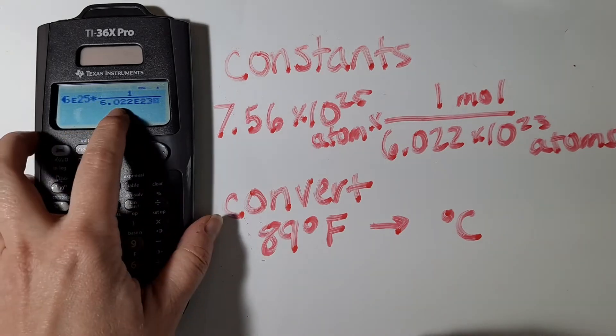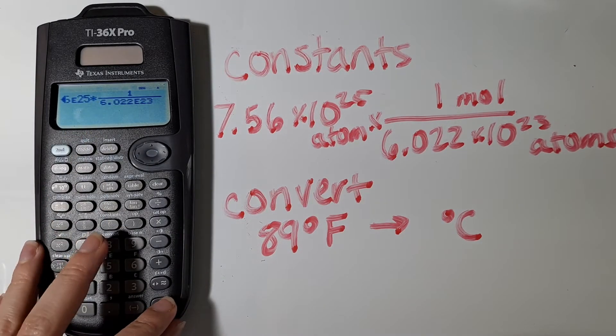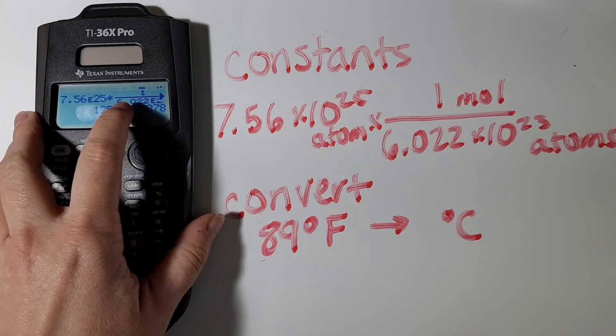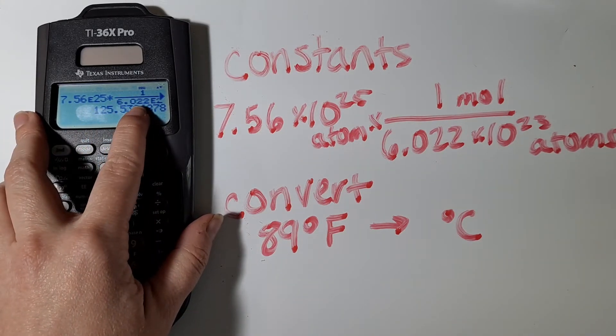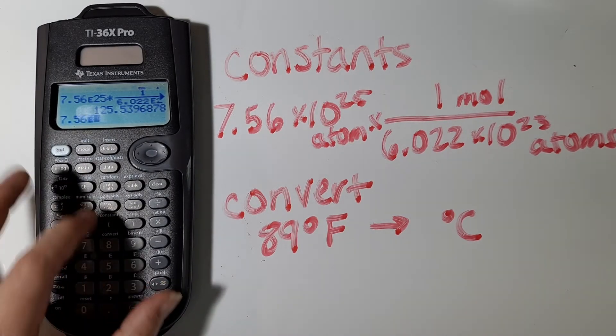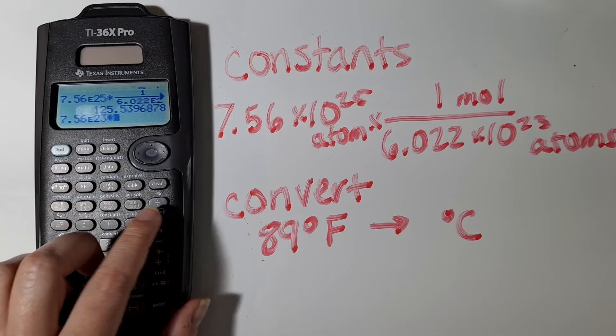which is 6.022 times 10 to the 23rd. And so I can type that in as it is. But my calculator already has Avogadro's number stored in it. And so instead, I could be typing in the following.